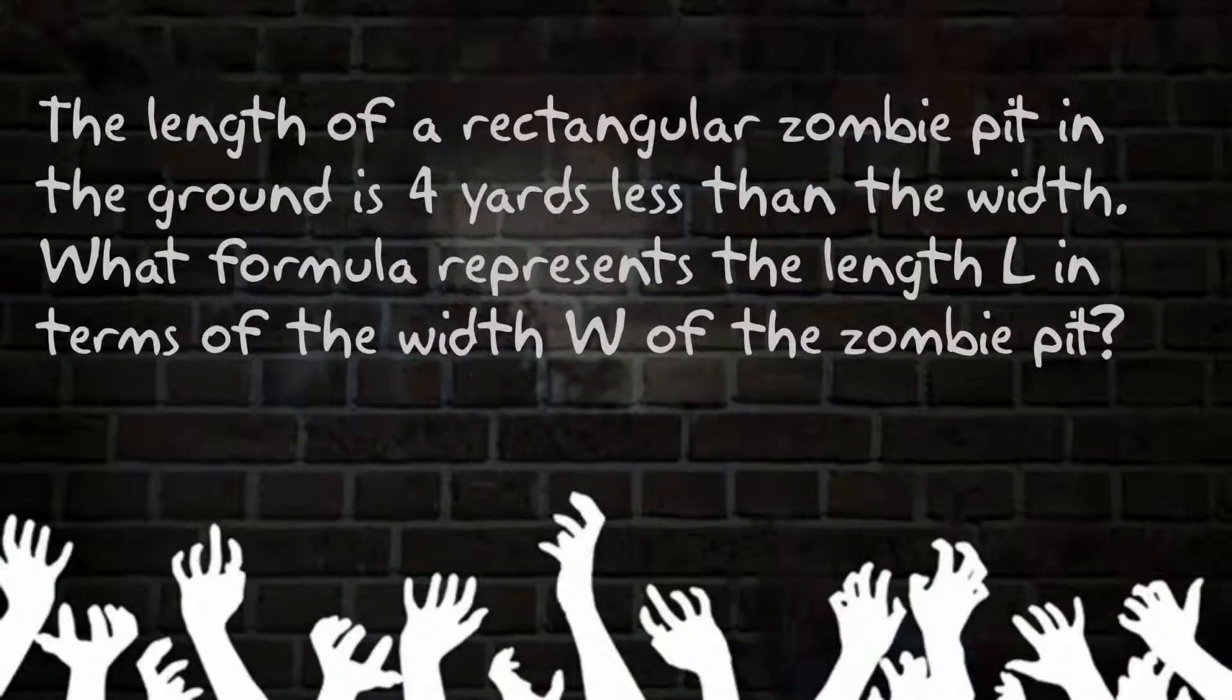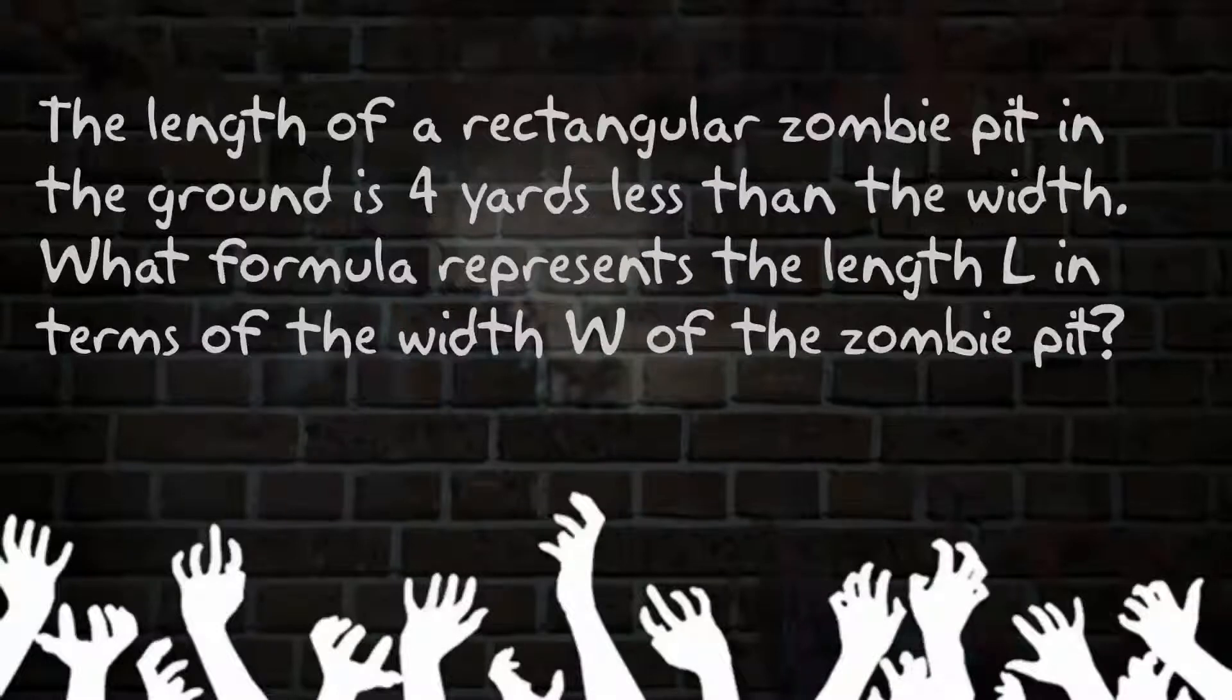The length of a rectangular zombie pit in the ground is four yards less than the width. What formula represents the length, L, in terms of the width, W, of the zombie pit?